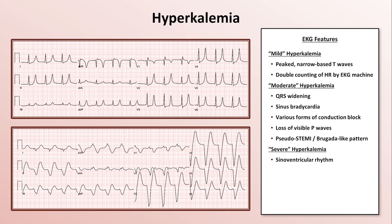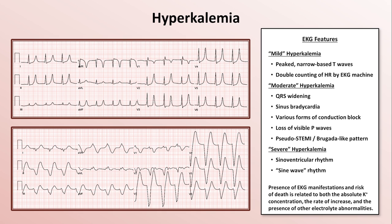Profound hyperkalemia will eventually result in such a prolonged and bizarre QRS that the distinction between QRS complex and T wave becomes lost, leading to what is sometimes referred to as a sine wave rhythm. The reason mild, moderate, and severe are placed in quotation marks is because these are relative and arbitrary designations. The presence of EKG manifestations and risk of death is related to not only the absolute potassium concentration, but also to the rate of increase and the presence of other concurrent electrolyte disturbances. The EKG is probably not as sensitive for picking up hyperkalemia as is commonly believed — I've seen more than one patient with a potassium above 7 and a stone-cold normal EKG.